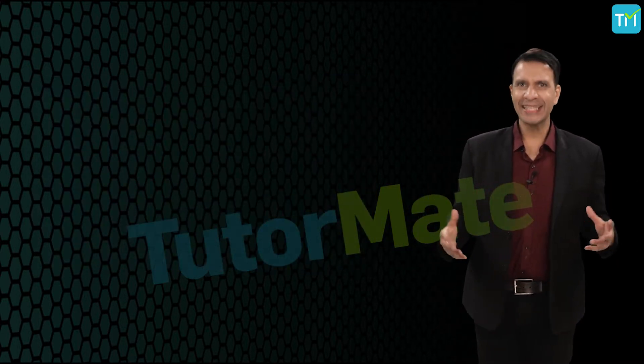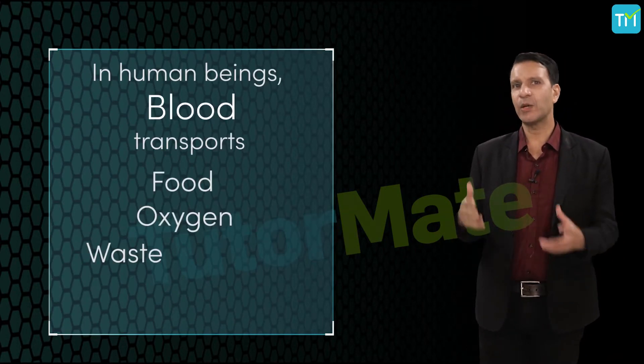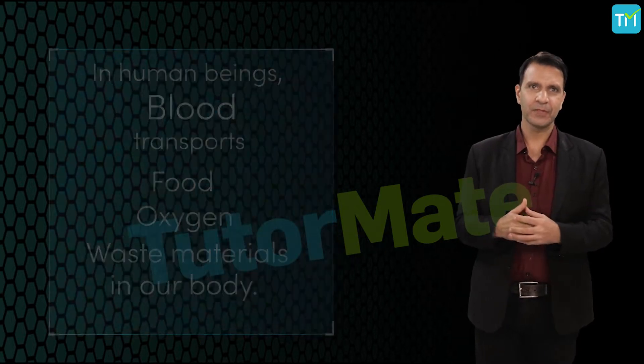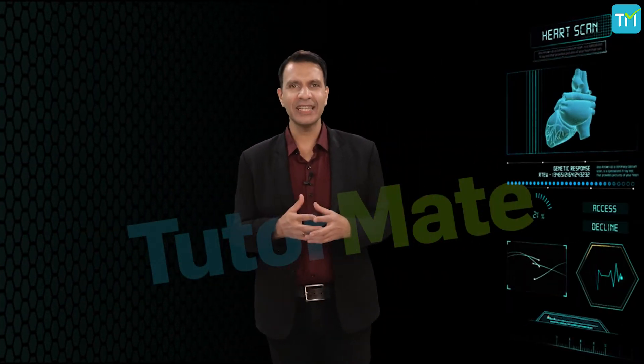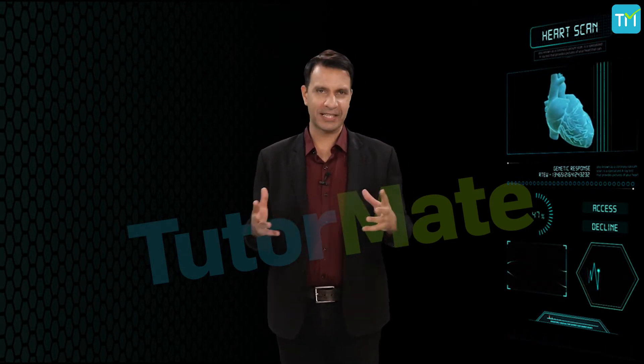Now we know that in human beings, blood transports food, oxygen and waste materials in our body. So let's just look at the composition and functions of blood so that we understand the transport mechanism better.